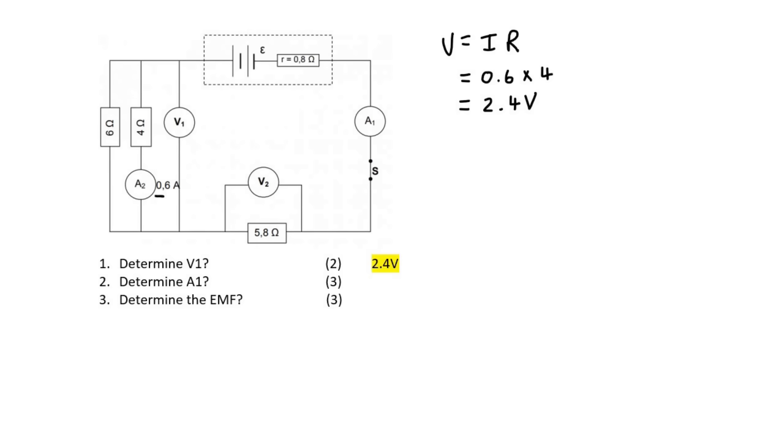The next question says determine the value of A1. So A1 is the current flowing in the main part of the circuit. What we must realize is that the conventional current flows out of the positive and then it gets to this part over here and then it splits. Some of the electricity will go down this branch while the remaining electricity would go down here.